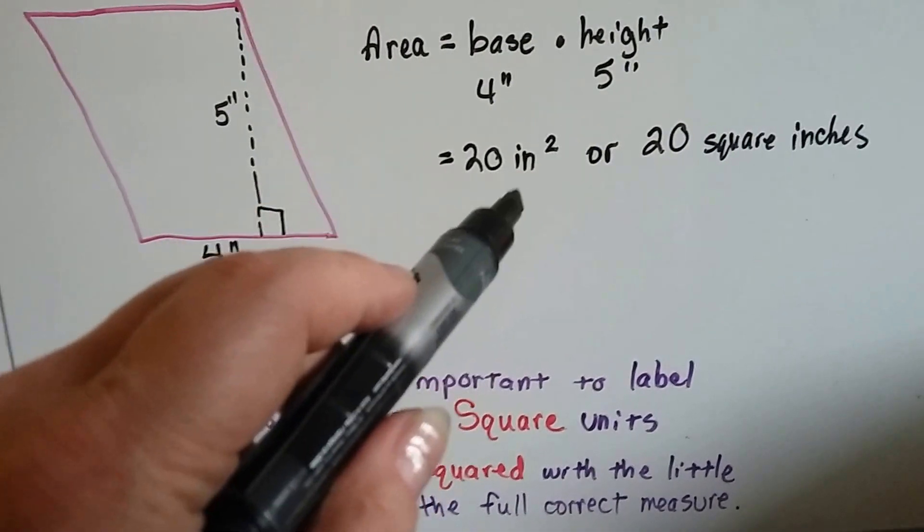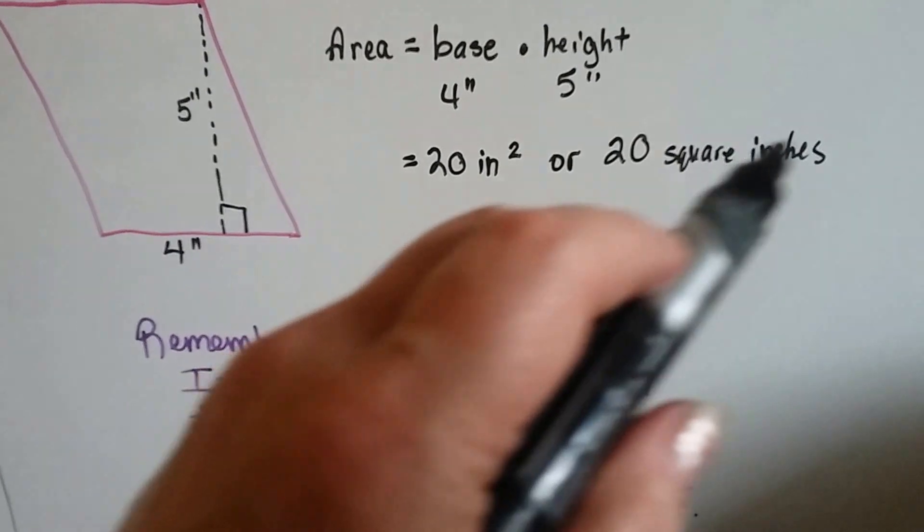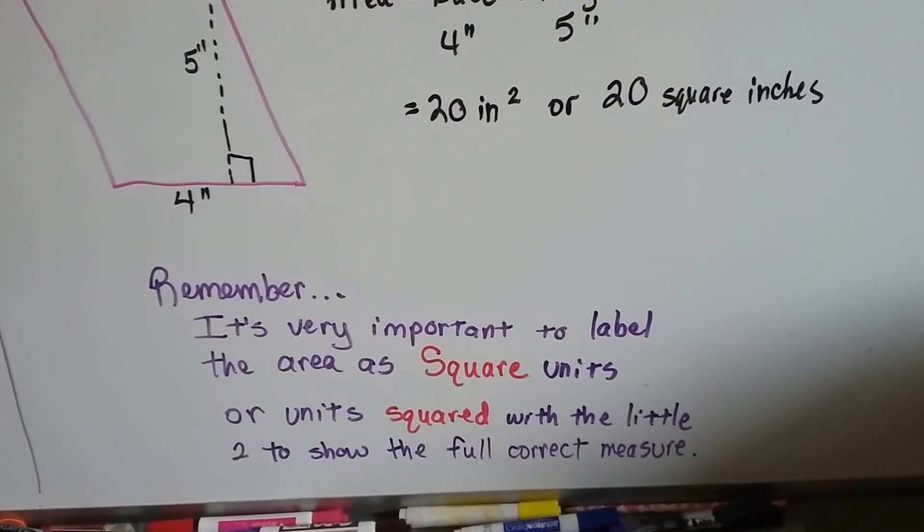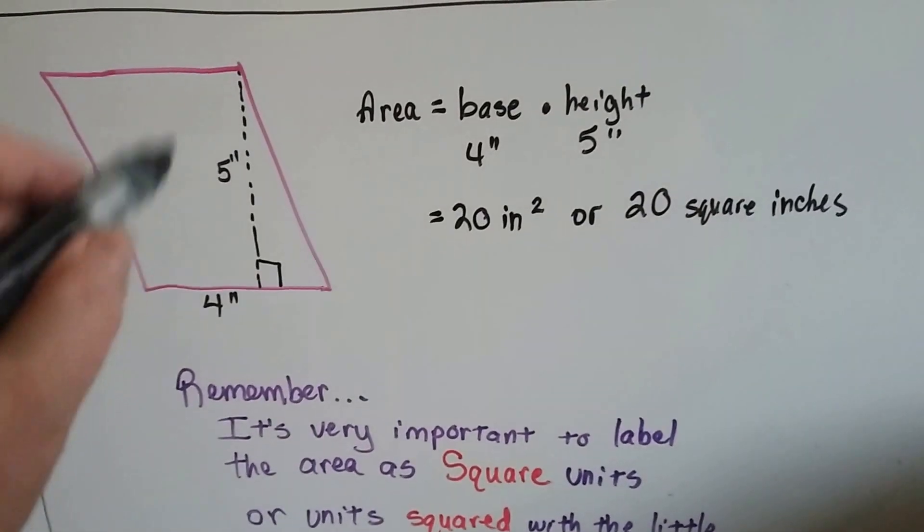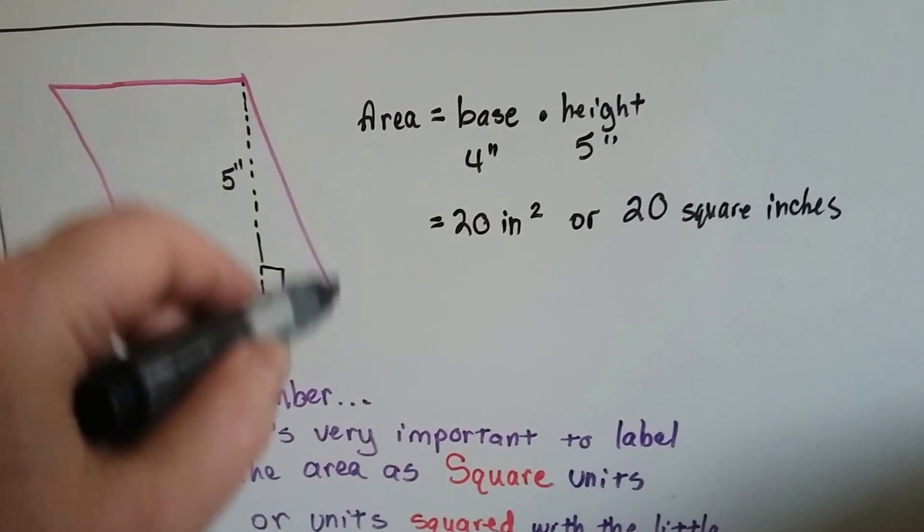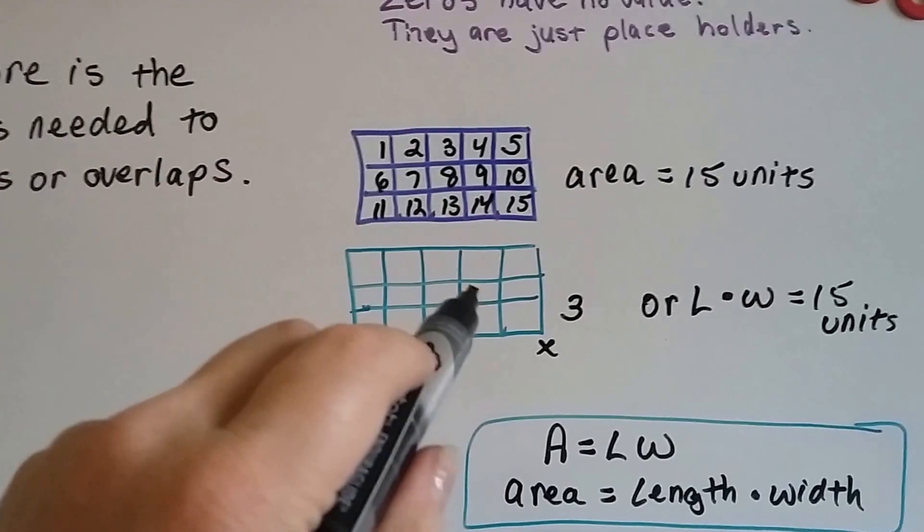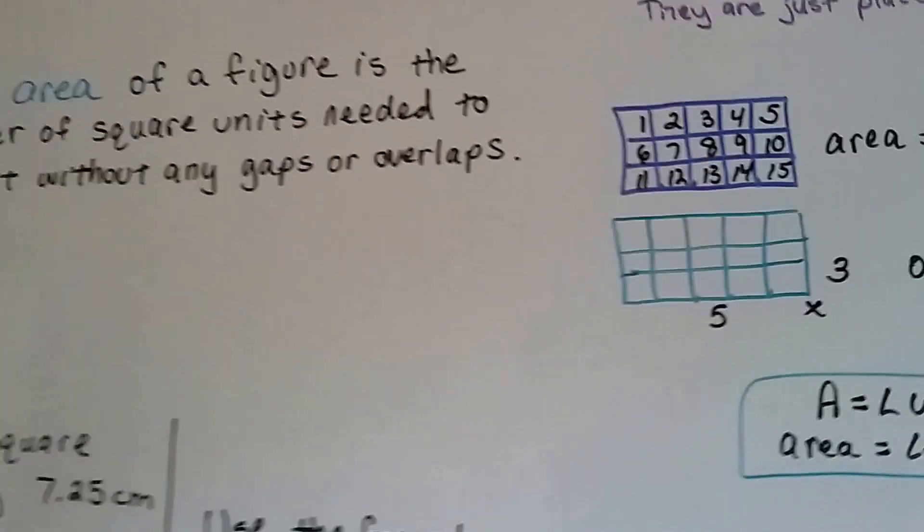Either with inches squared or feet squared or centimeters squared, or write it out as square inches. Either way, we have to show the full correct measure and you want to show that the inside is filled up. We're not doing the edge, we're not doing the perimeter, we're filling it up completely. And by saying square units, that lets everyone know that we're talking about the inside is all filled up.